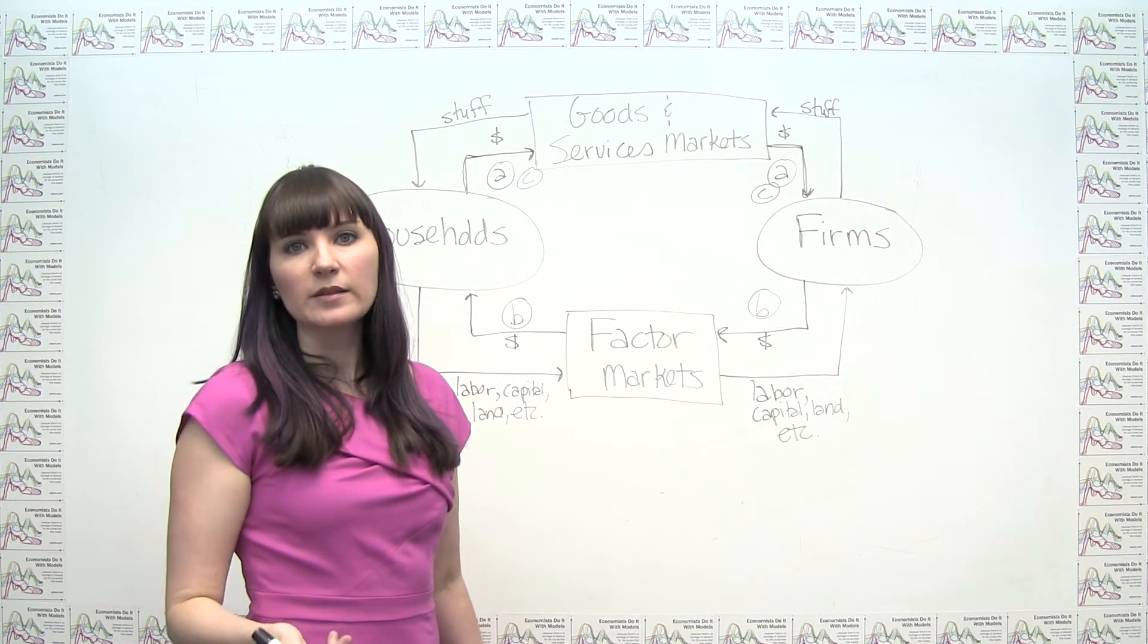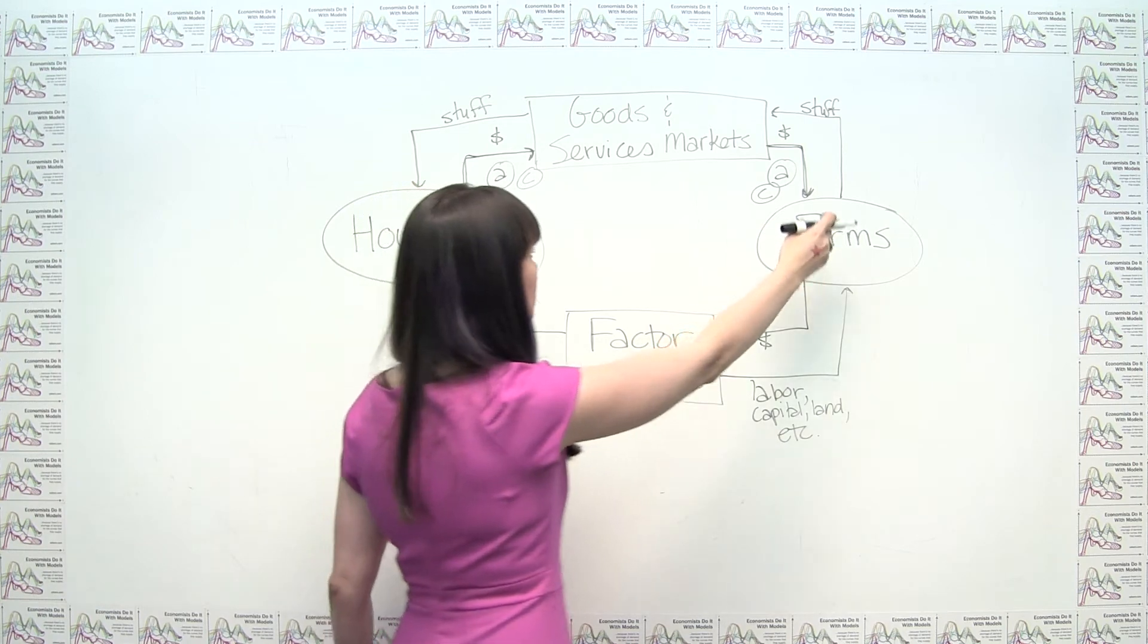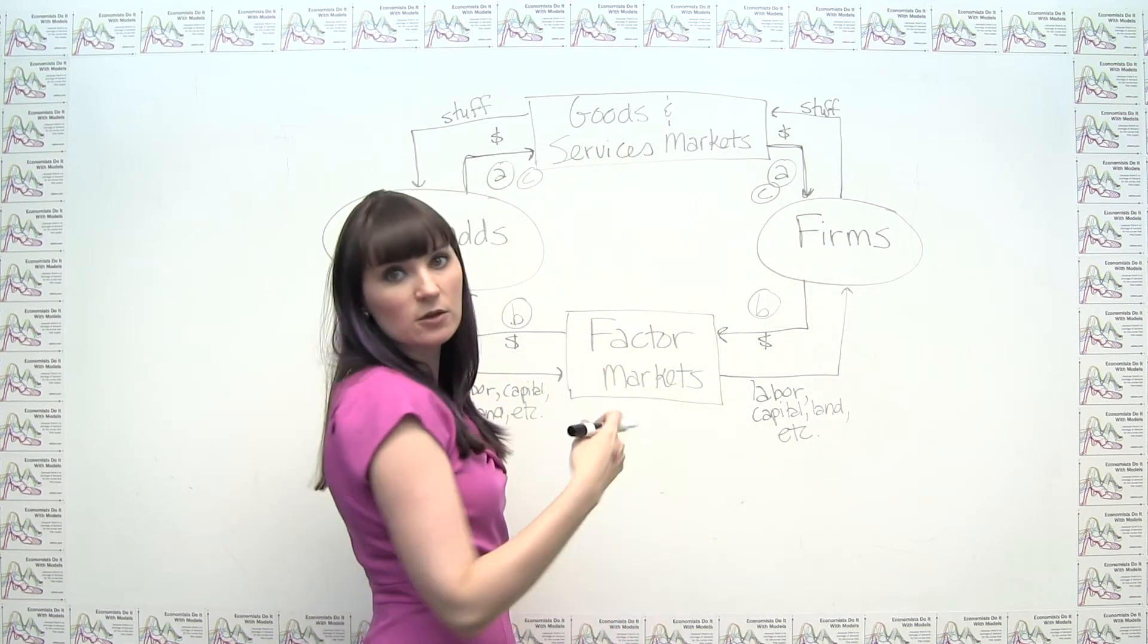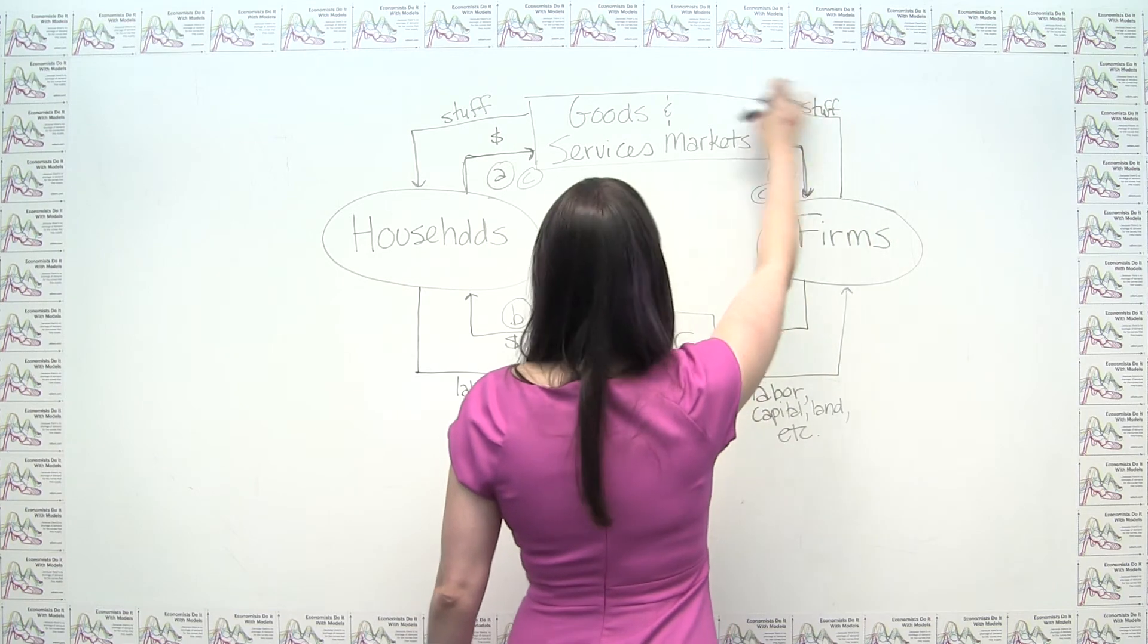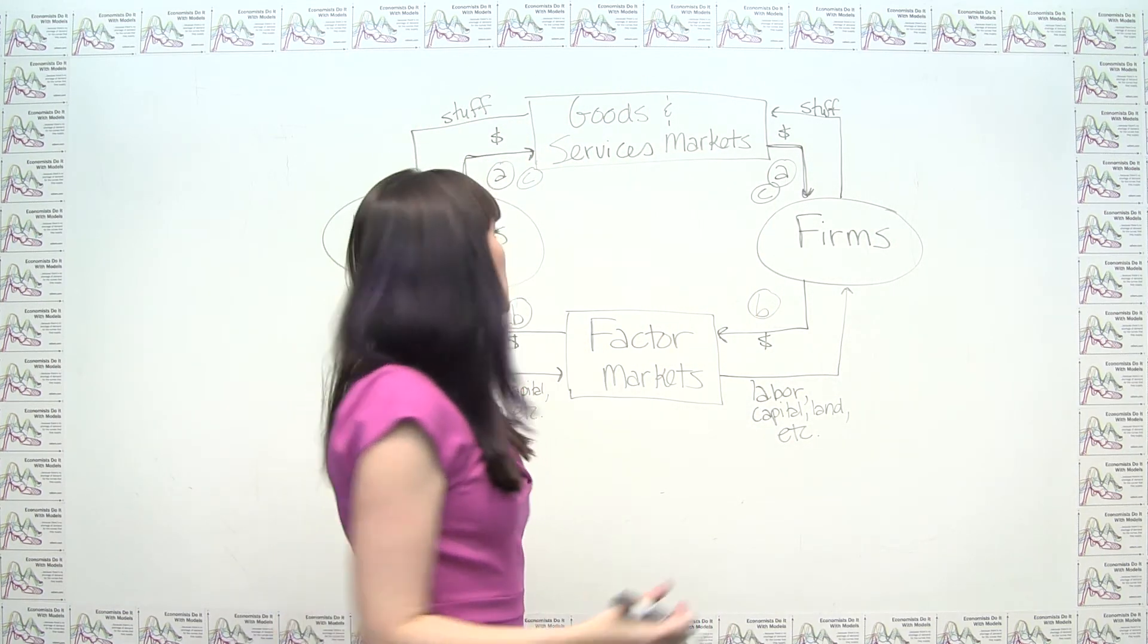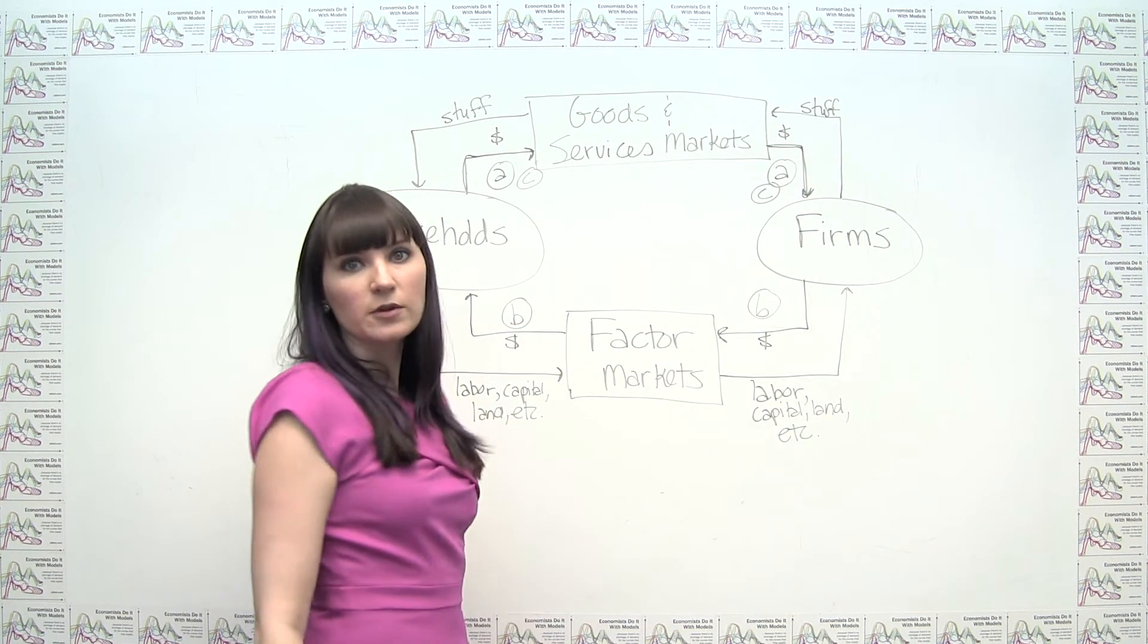But then to be complete about this, we would also keep in mind that, oh, we also have a service in this case. It wasn't a physical good, but it was a service going from the haircut place back to Shana. But in any case, we're dealing with this side of the circular flow diagram.